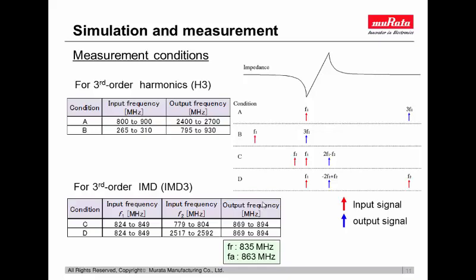For third-order harmonics, conditions A and B are used. And for third-order IMD, conditions C and D were used for simulations and measurements. The relation between input and output signals in each condition is shown in this figure. Red arrows represent signal input and blue arrows represent the signal output in each condition.